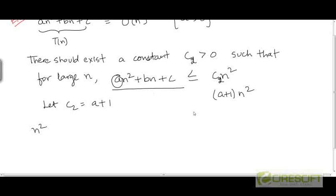For this inequality to hold, n² multiplied by (a+1) - a, which is nothing but the coefficient 1, so n² - bn - c is greater than or equal to 0 for large n.